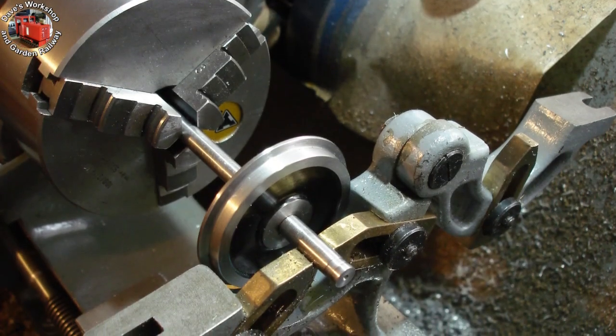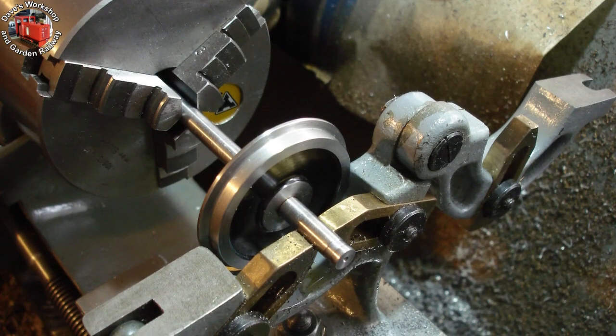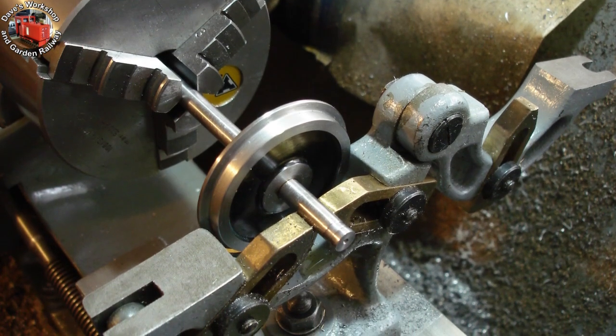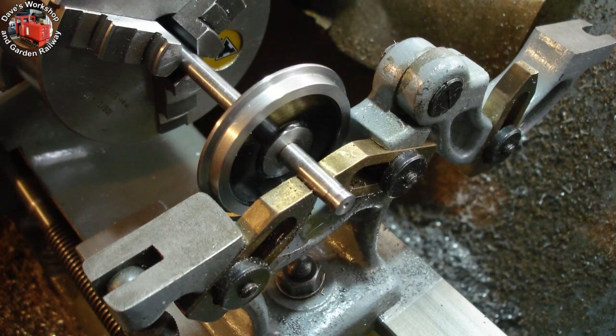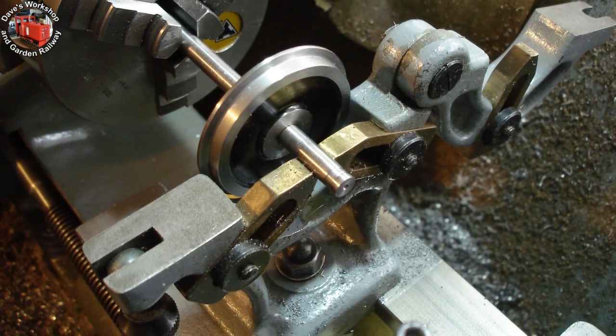I forgot that I wanted to undercut the axle for the crank grub screws, so I had to use a fixed steady. Grub screws damaged the surface somewhat and would prevent easy passage of the bearings.